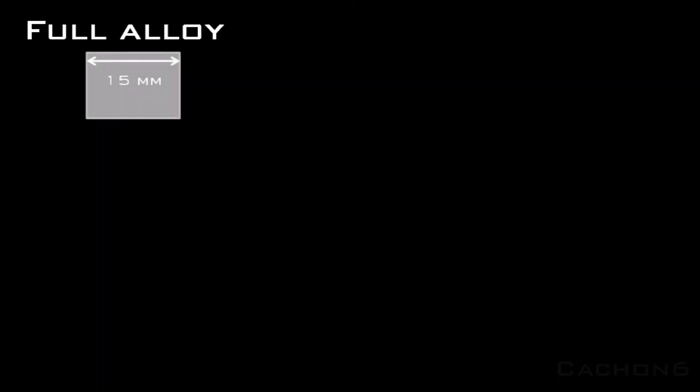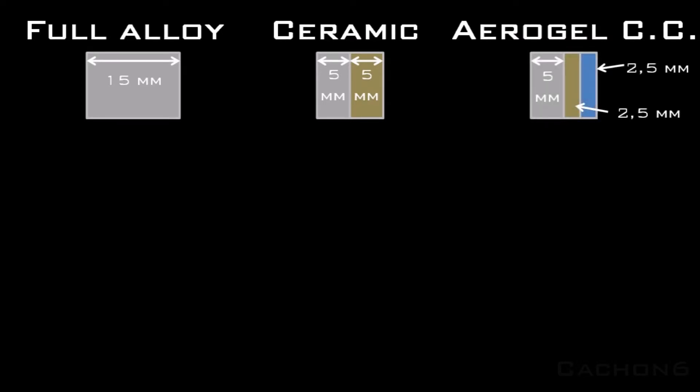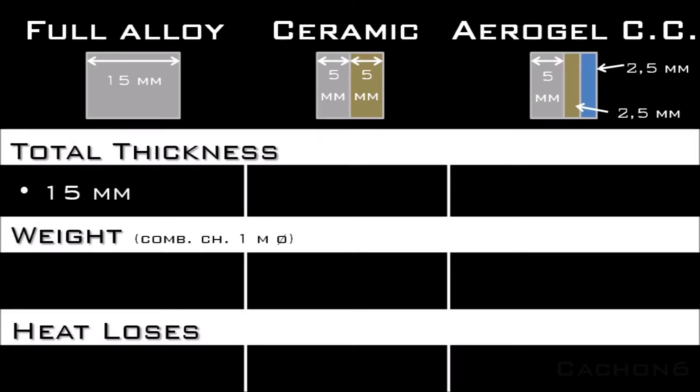To test the results, we are going to compare our setup with the aerogel to two different methods: one using the traditional alloy-based insulator, and another using part ceramic, part alloy insulator. We will compare 50mm of alloy, 5mm of alloy plus 5mm of ceramics, and our proposal which includes 5mm of alloy, 2.5mm of ceramic, and 2.5mm of aerogel. The total thickness is 15mm for our case and 10mm for the other two.